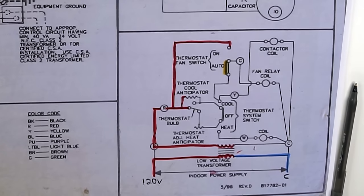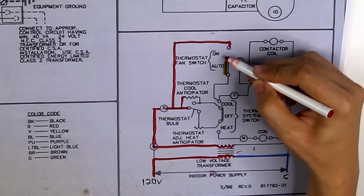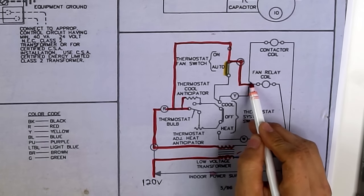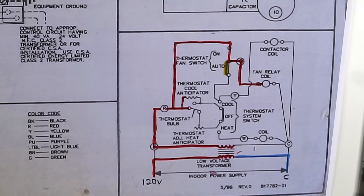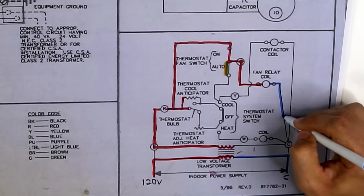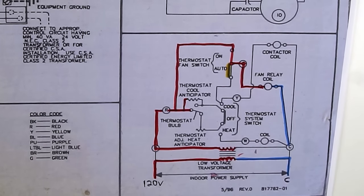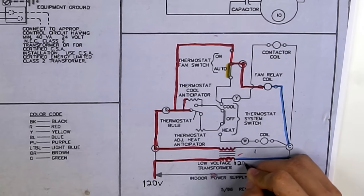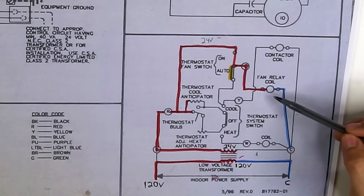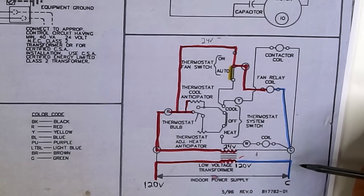If you move the fan switch on the thermostat from auto to on, this bar will close and send power through the G line, which goes into the fan relay coil. Once the fan relay coil energizes, that will turn on the blower fan inside your furnace. The transformer is getting 120 volts and putting out 24 volts. So everything after the transformer is 24 volts. Turning the fan switch to on closed this circuit and energized the fan relay coil, which powered the blower motor.